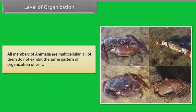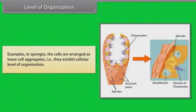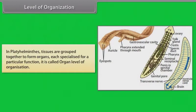In sponges, the cells are arranged as loose cell aggregates — that is, they exhibit cellular level of organization. In coelenterates, the cells performing the same function are arranged into tissues, hence it is called tissue level of organization. In Platyhelminthes, tissues are grouped together to form organs, each specialized for a particular function — it is called organ level of organization.